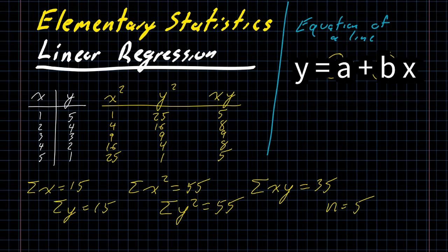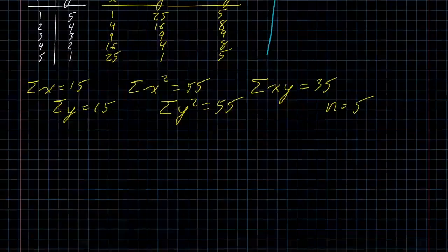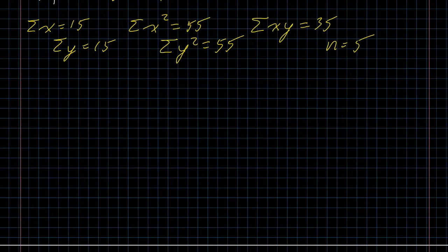Before I start writing anything else down, though, I want to again stress that we have to make sure that the relationship we're looking for has a statistically significant correlation. If it does not, we can still do this calculation, and it will be completely meaningless and useless. But we know that this particular set of data has that statistically significant correlation. So we can go ahead and do the calculation.